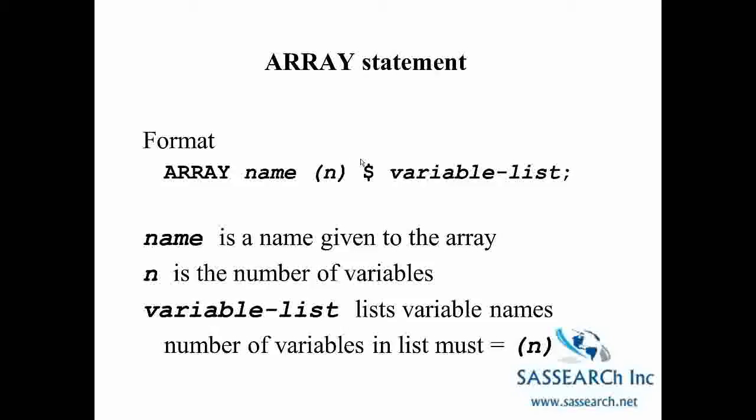So if you want to have an array of 10 variables, then that n in parentheses is going to have to be 10. If your array is made up of character variables, you will need to include a dollar sign in the array statement. And then lastly, you will need to give a list of the variables that are going to be in your array.